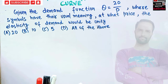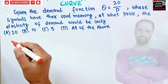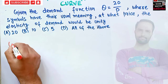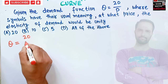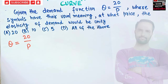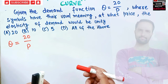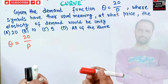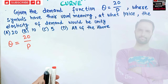We are given the demand curve Q equals 20 upon P, and we need to find the price at which this demand curve yields a price elasticity of demand equal to unity.